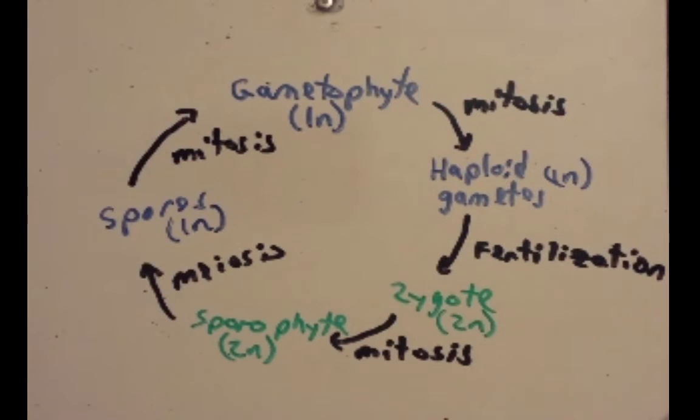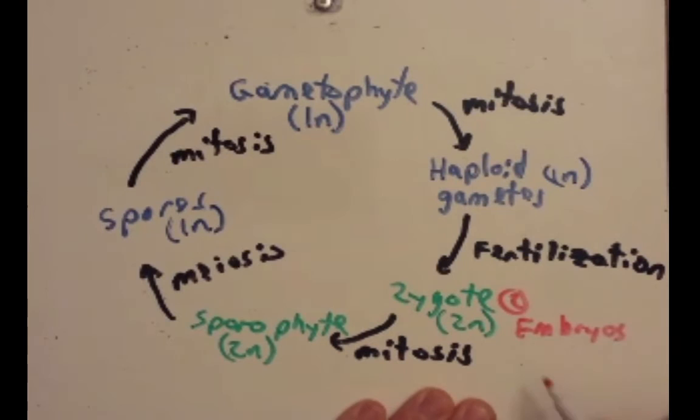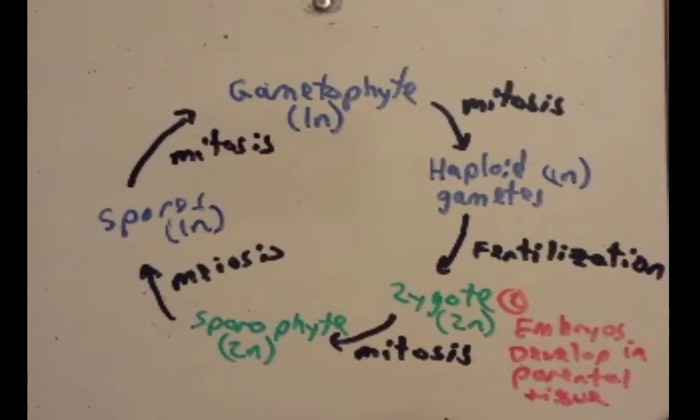So looking at this here we're going to point out some of the other key adaptations. And the second adaptation is that the embryos develop in the protection of parental tissue. This is really important. By doing this the embryo is protected from the harsh conditions of the environment, and also the parental tissue can provide nutrients.